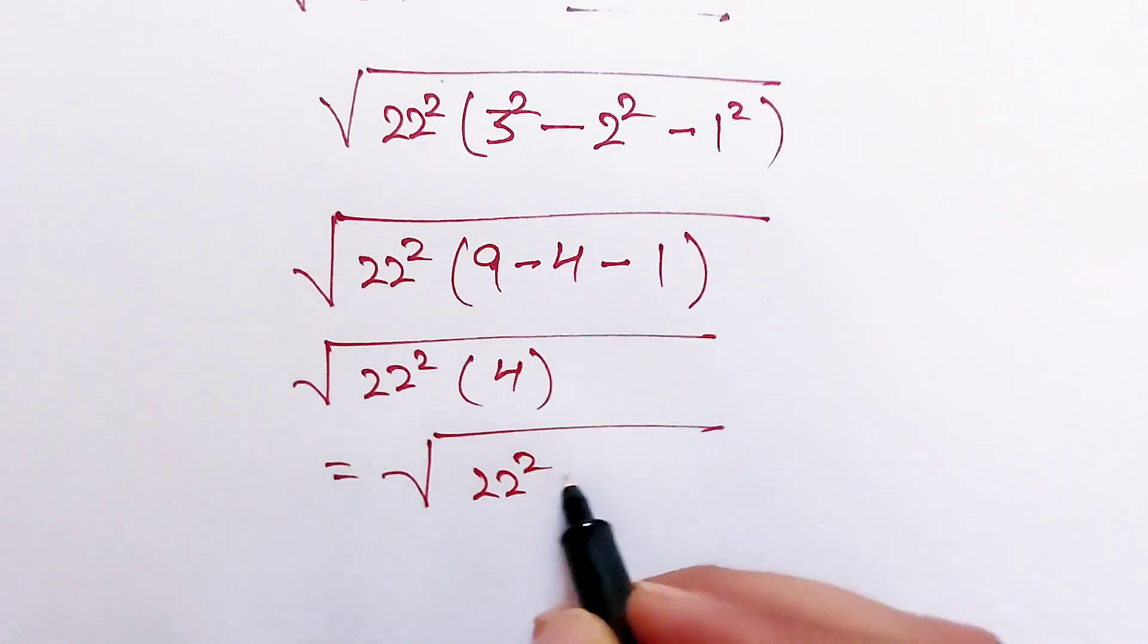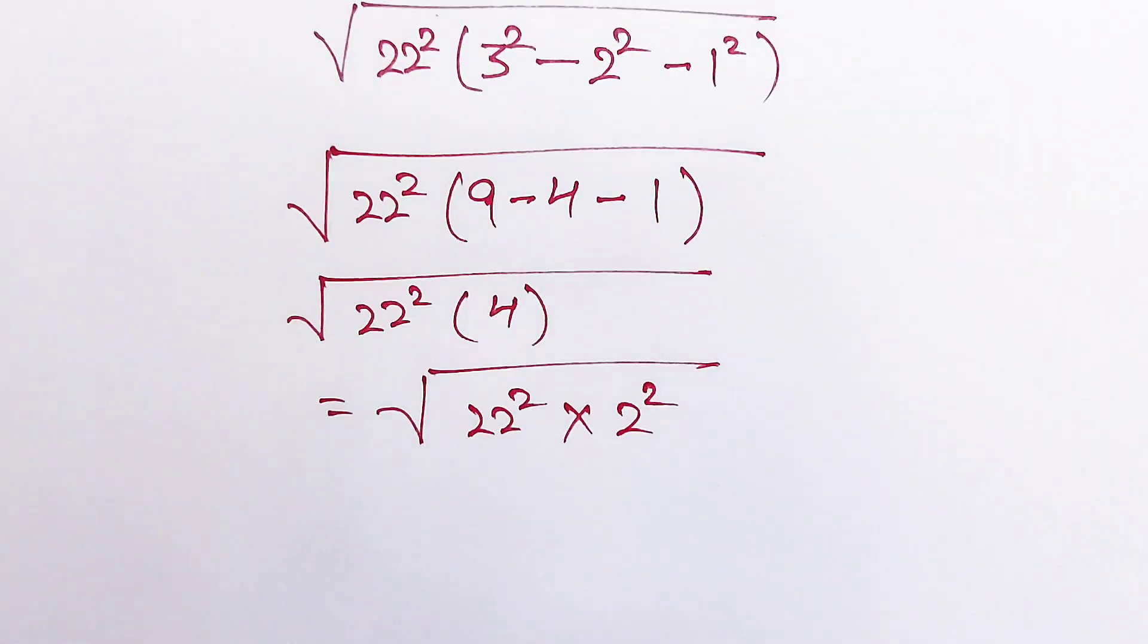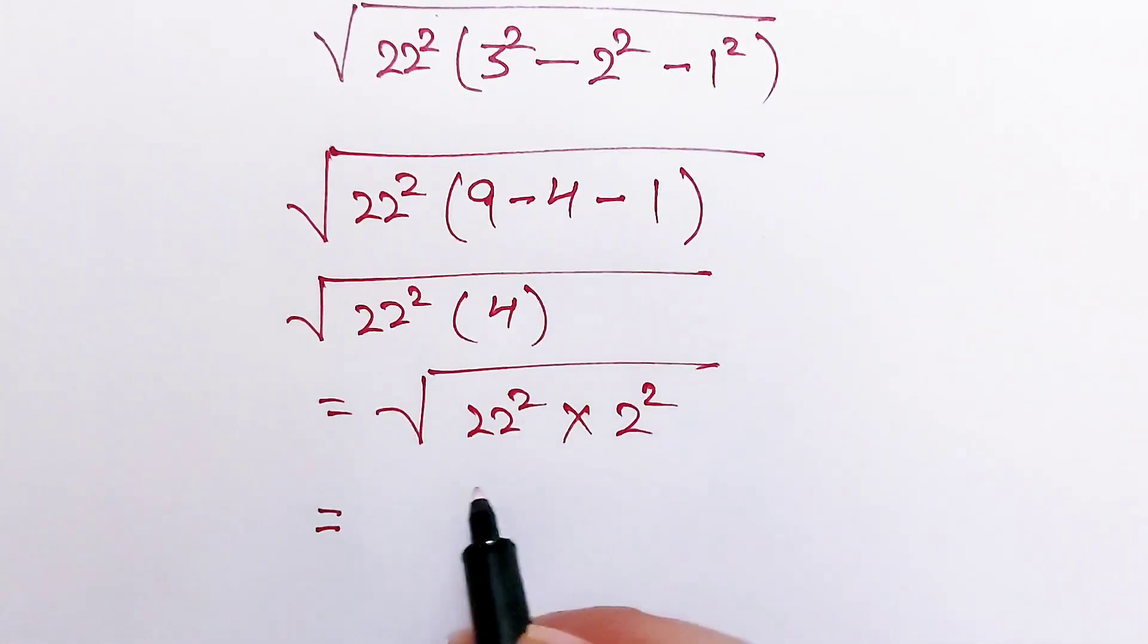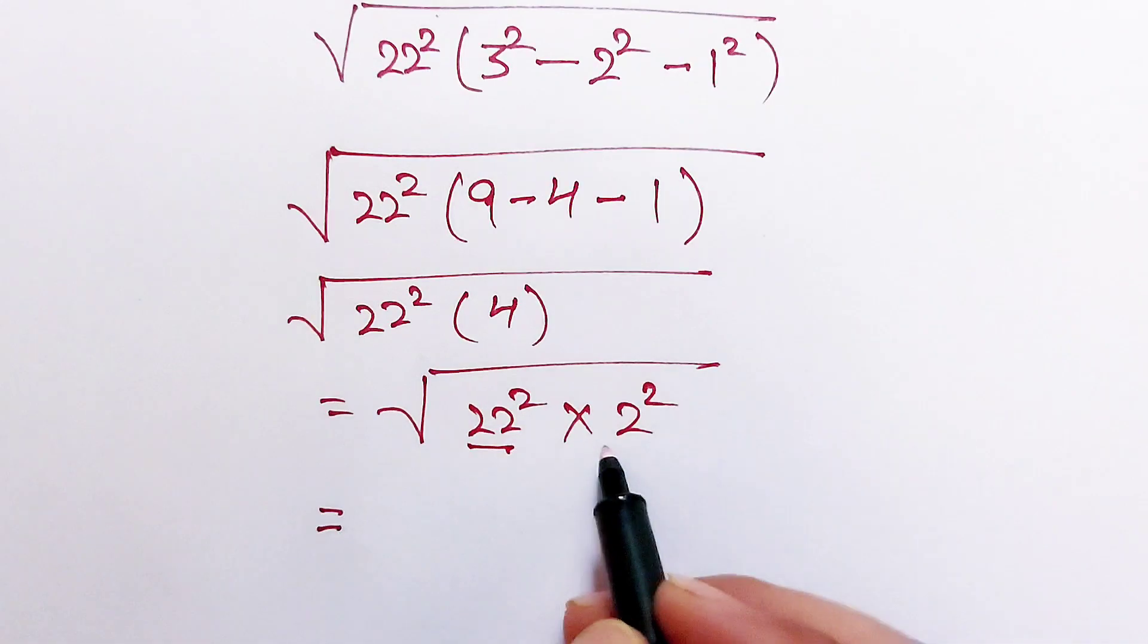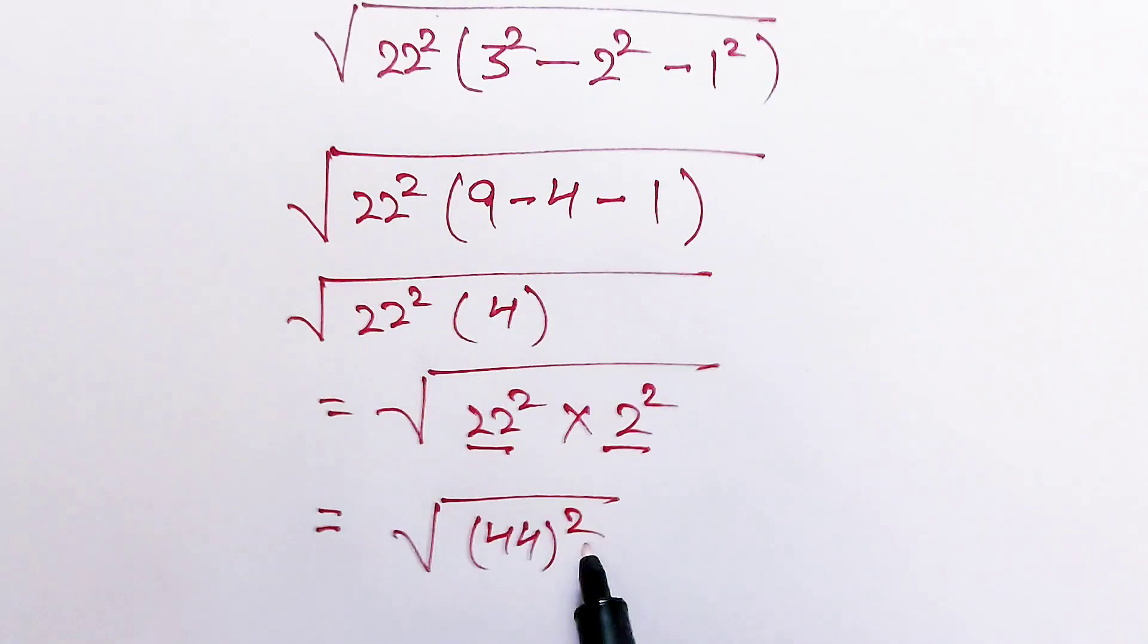22 squared, this 4 can be written as 2 squared. And here powers are same, then base quantities will be multiplied. Here this is equal to 44 squared.